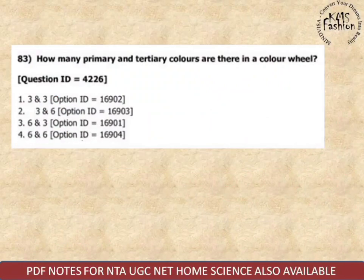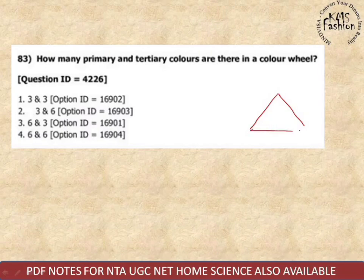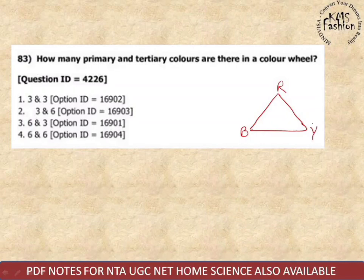Next question: how many primary and tertiary colors are there? Whenever a color question comes, make a diagram. We have red, blue, and yellow — these are primary colors. Primary colors number three.